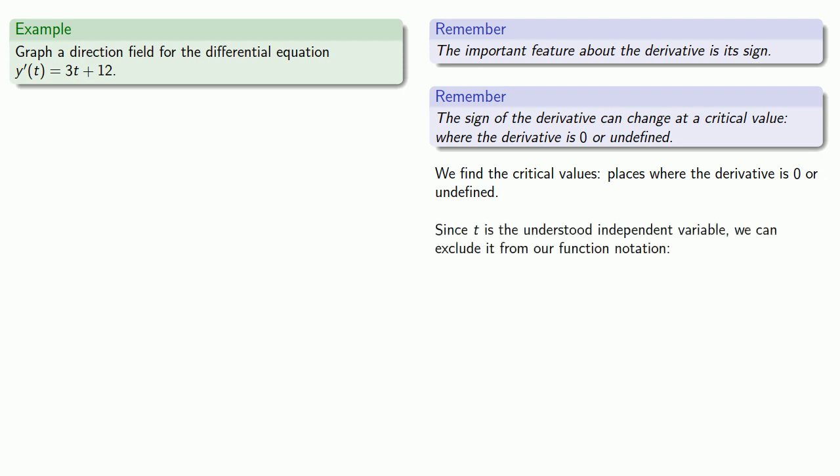So again, since t is the understood independent variable, we can exclude it from our function notation. So instead of writing y prime of t, we can just write y prime, and then it's equal to 3t plus 12. Where we have to keep this t because this is not part of our function notation. We want to know where the derivative is 0 or undefined. So y prime is 0 when t is equal to negative 4. So our first step is in the t-y plane, we'll graph t equals negative 4.